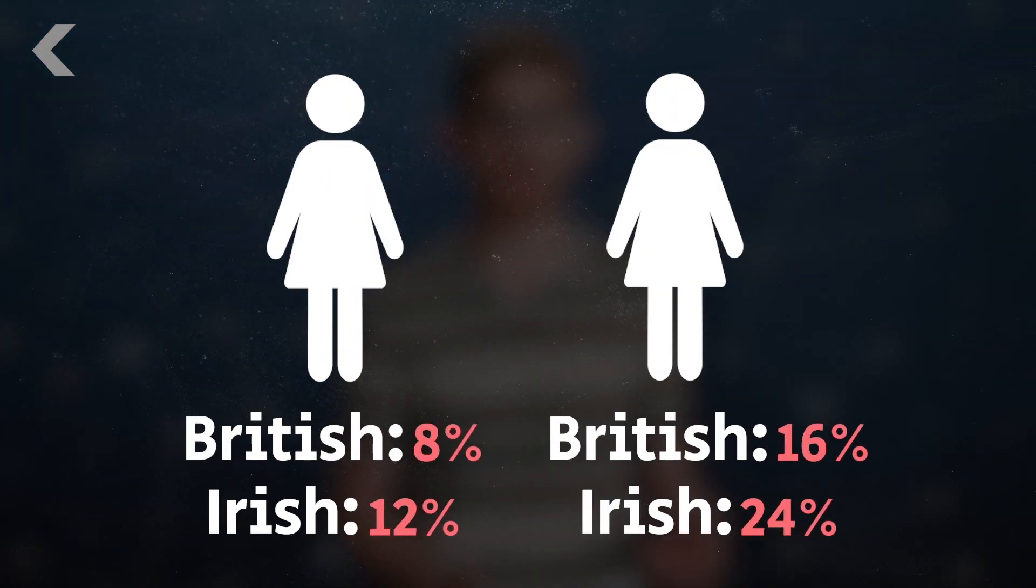One test of fraternal twins found one twin's DNA was nearly twice as British and Irish as the other. Obviously, they have the same parents, so they have the same family history, but the DNA that was passed down to them and then tested was wildly different. To complicate things further, there is no one definitive gene from anyone that pinpoints where they're from.